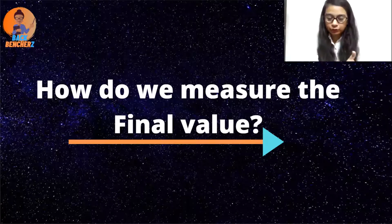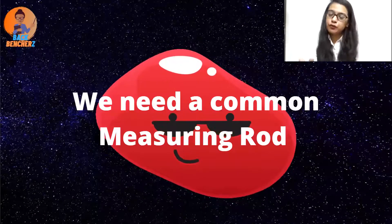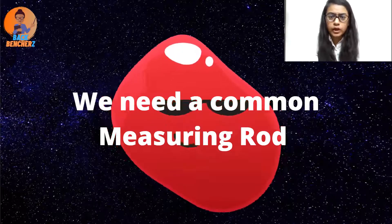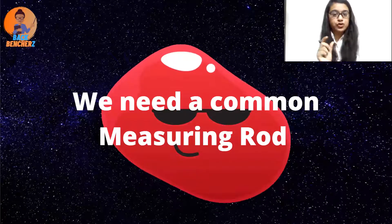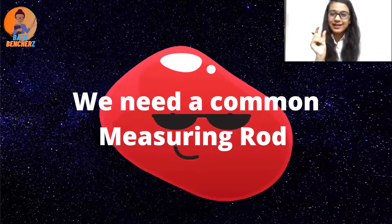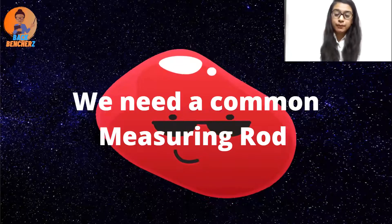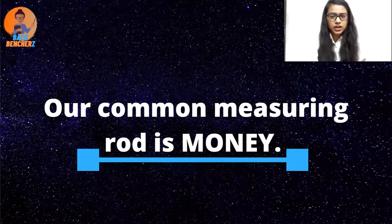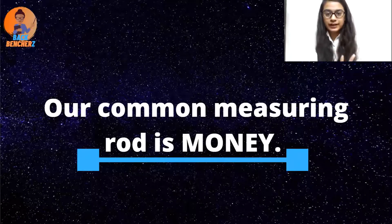Now another question arises — to measure the final value, what do we do? For that we must have some measuring rod. For example, if we have produced a thousand meters of clothes in a year, you cannot just add quantities together. Similarly for rice — you need a measuring rod to calculate final value, and that measuring rod is money. We calculate and measure everything in terms of money — whether it is profit, loss, or anything else — for the total flow of production.